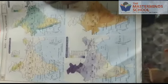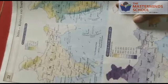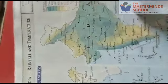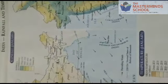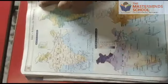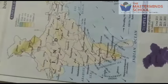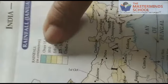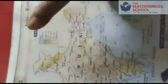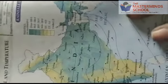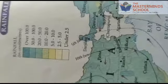We can also know the climate of places through the map. This shows rainfall and temperature — how much rainfall there is and the temperature, how hot or cold. Everything we can know. Colors are also mentioned here, and according to them we can know the degrees of temperature.